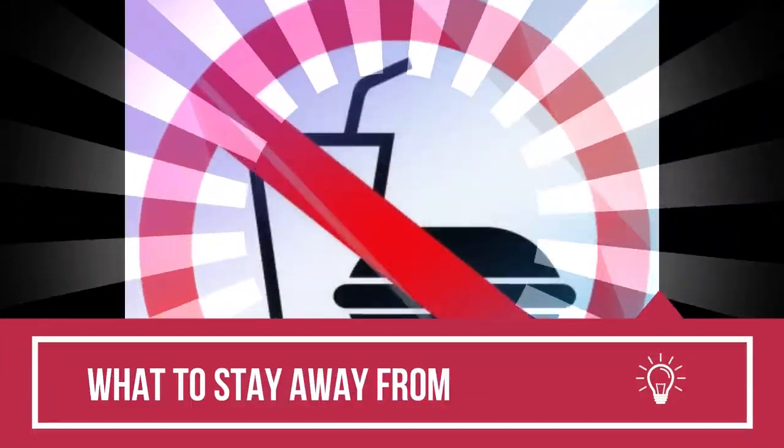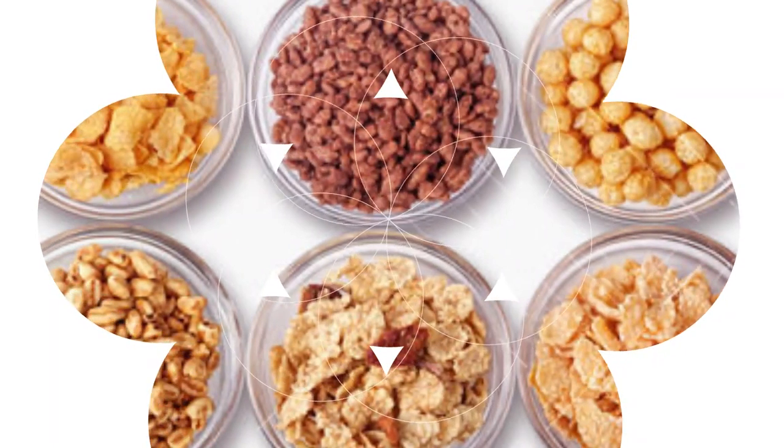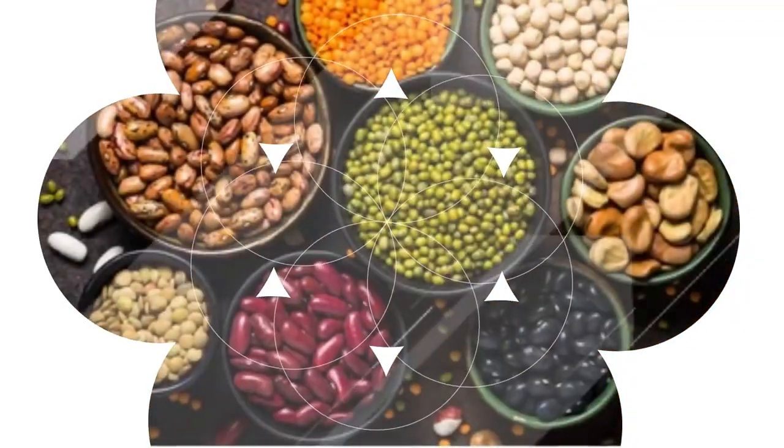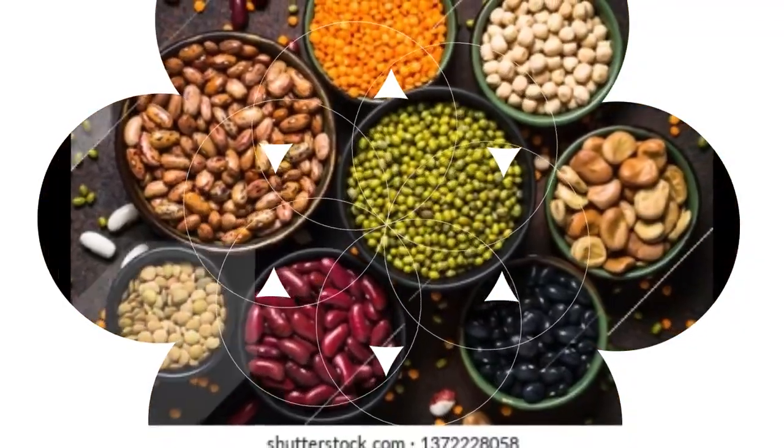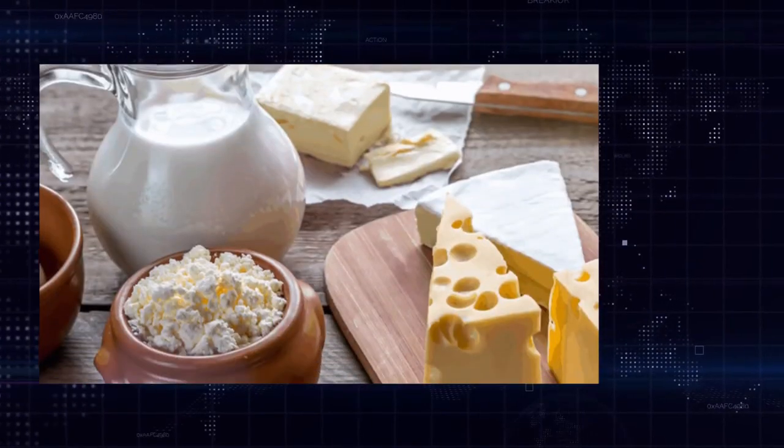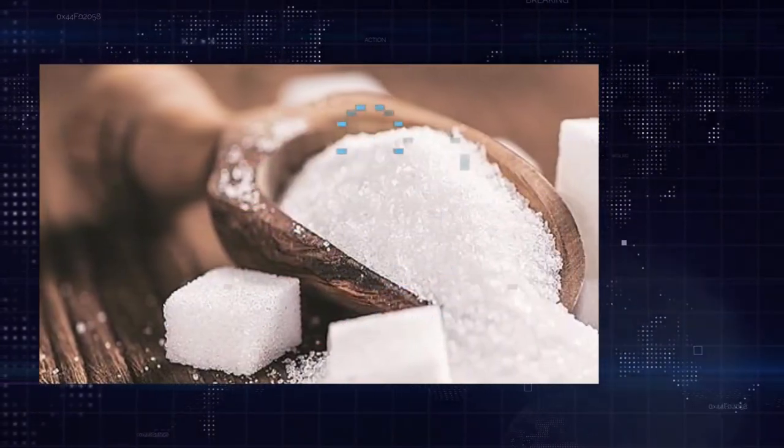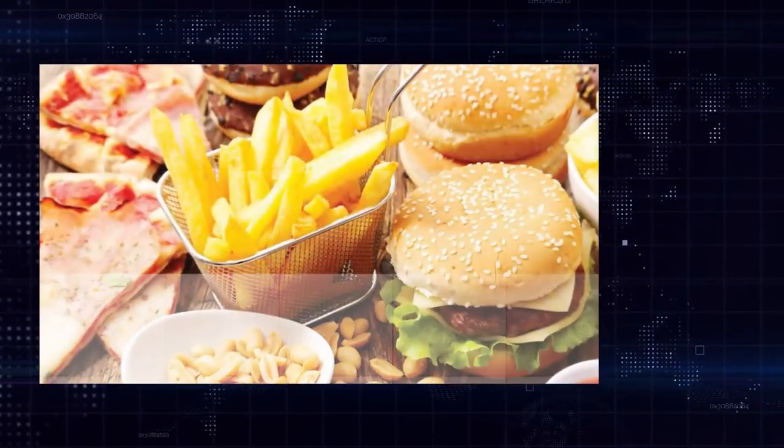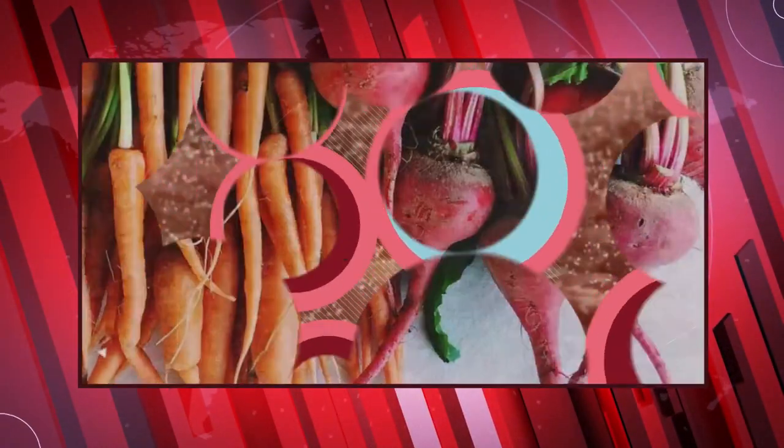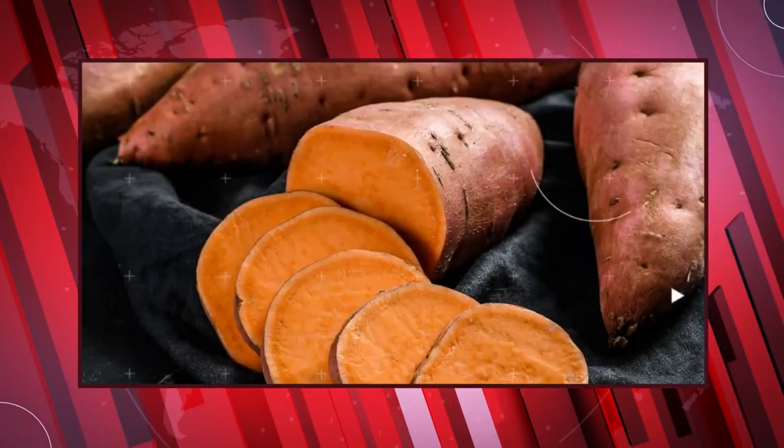What to stay away from: cereals, for example wheat, oats, or barley; legumes such as beans, peas, lentils, and peanuts; products derived from milk; sugar that has been refined; food that has been highly processed; salt; and root veggies that aren't supposed to be cooked, for example potatoes.